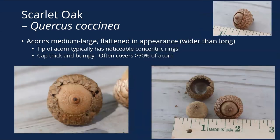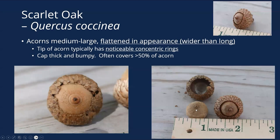The acorns are really what helps you identify scarlet oak. Scarlet oak acorns are pretty big — medium to large — but they're flattened in appearance, often wider than they are long. The cap usually covers almost all of the acorn. The big thing: if you look at the tip of the acorn, there are often noticeable concentric rings around the tip. You can see that in the picture on the left and on the other acorns in the right-hand picture. Those concentric rings on these flattened acorns really get you to scarlet oak.